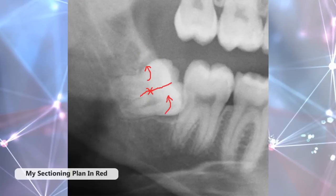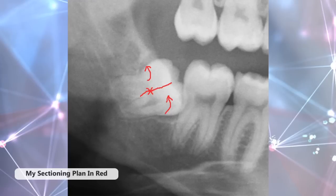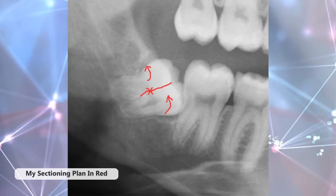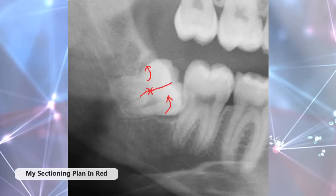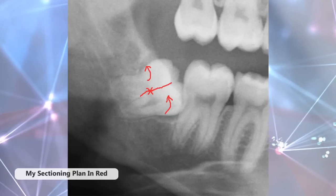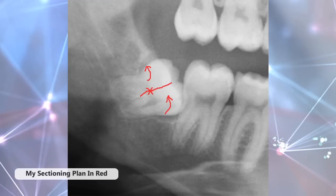We'll first elevate the distal root and then the mesial root after the distal root is out. By following this sequence, we avoid any pressure on the IDN when we elevate the mesial root. The star marks where I start my section — I expose the pulp chamber first and use it as a guide to go apically and coronally.